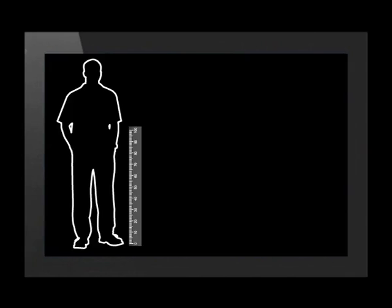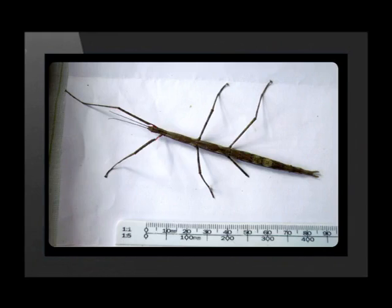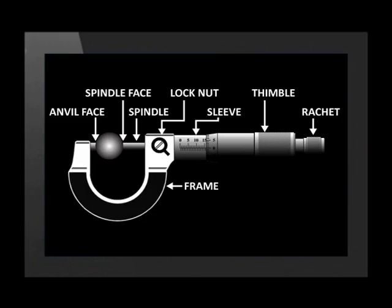A tape measure or a meter ruler is useful for measuring the height of a person correct to the nearest centimeter. A biologist will need to make detailed measurements when classifying insects and needs a ruler with far smaller units of measure. This is so they can find the exact length of the species they are studying. A micrometer can measure the length of a small insect to the nearest tenth of a millimeter.